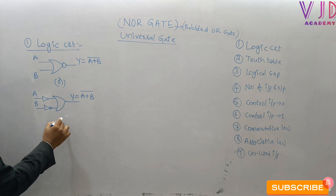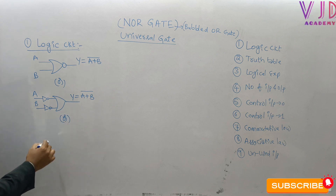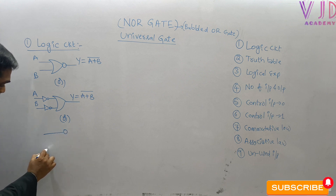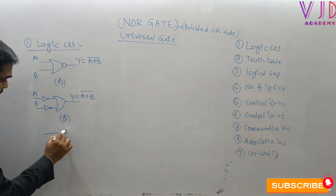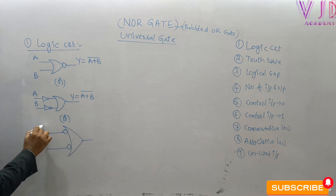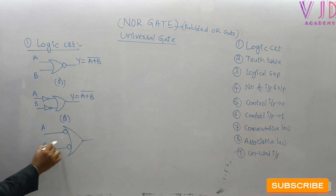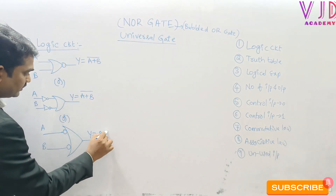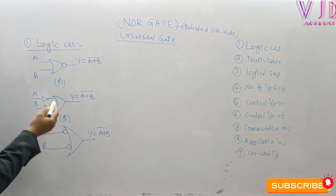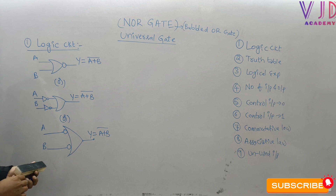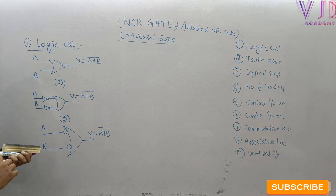We can also draw the NOR gate circuit by taking one bubble on each input and connecting them to an OR gate with inputs A and B. This also acts as Y = (A+B)̄. So these three representations are the logic circuits of NOR gates.